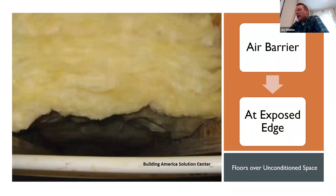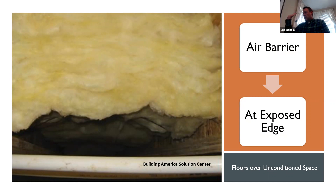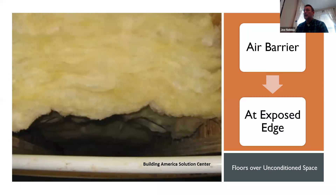An air barrier has to be installed at the exposed edge of any floor insulation. We can't have unexposed floor insulation in a floor over unconditioned space according to this — it's a mandatory requirement. If you've got an exposed edge of insulation at the floor, the air barrier has to be installed there.